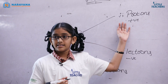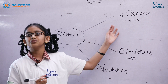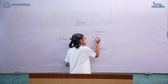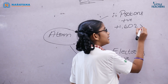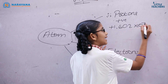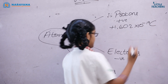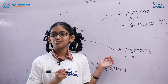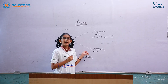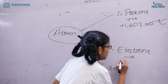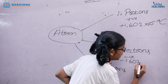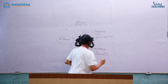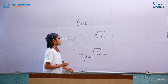The charge of protons is +1.602 × 10⁻¹⁹ coulombs. The charge of electrons is −1.602 × 10⁻¹⁹ coulombs. Neutrons have no charge.